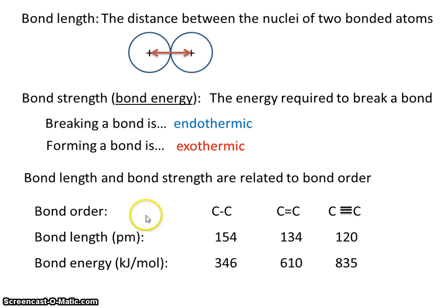Now let's compare bond order with bond energy. Well, bond energy goes from 346 to 610 to 835. So when bond order increases, bond energy also increases. So a single bond is stronger than a double bond. I'm sorry, a double bond is stronger than a single bond, and a triple bond is stronger than a double bond. So as bond order gets larger, bond energy also gets larger. That type of relationship is called direct. When one thing gets large and the other thing gets large, that's a direct relationship.